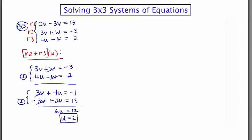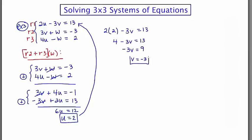So let's back substitute and solve for another variable. What I'm going to do is swing up here and plug into that. So I get 2u minus 3v is equal to 13, and I found u to be 2. So 4 minus 3v is equal to 13. Minus 3v is equal to 9, and v is equal to negative 3. 2 down, 1 to go.